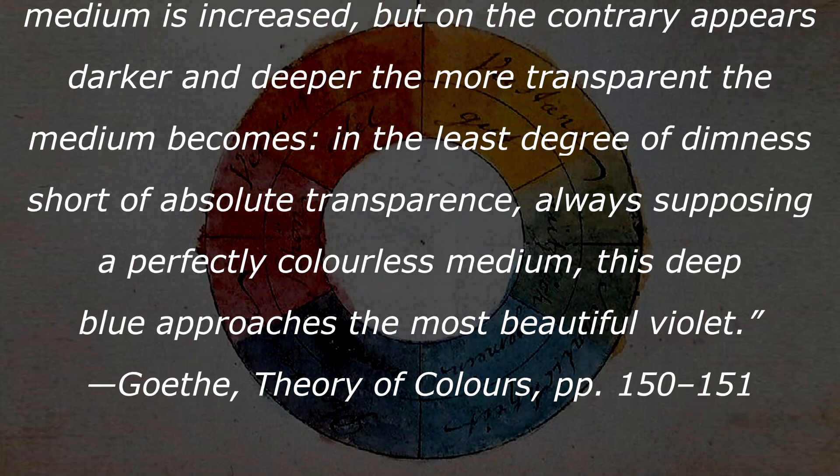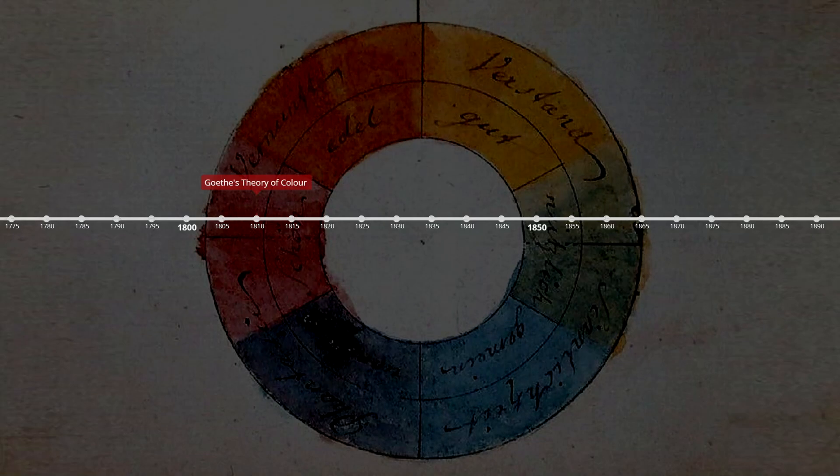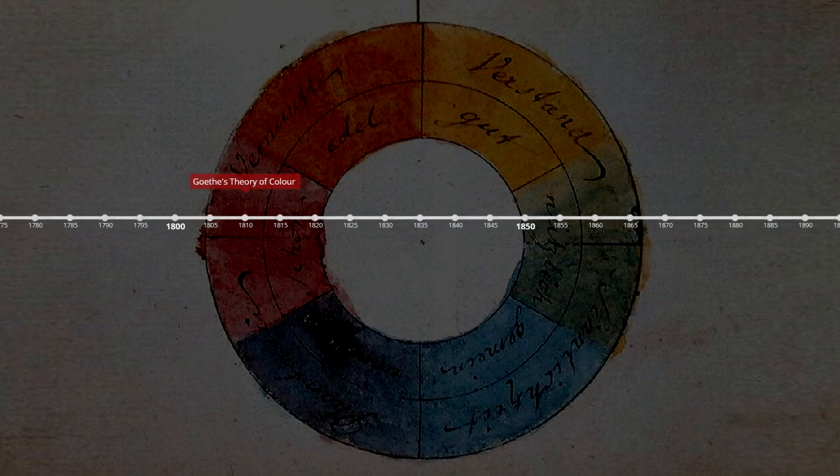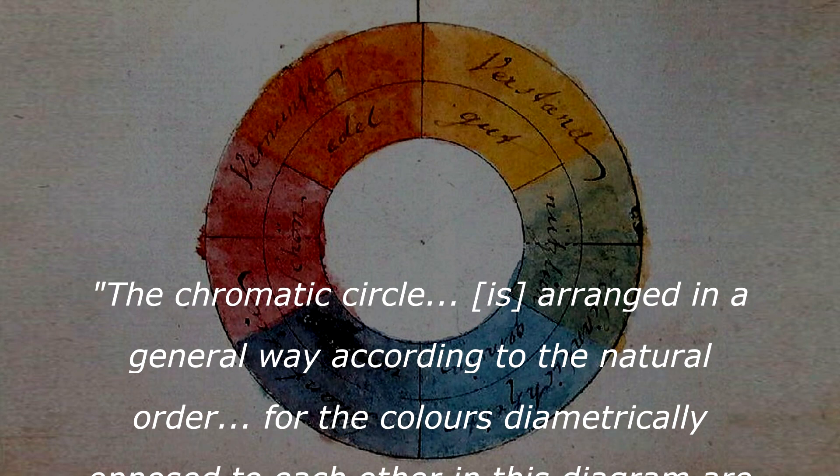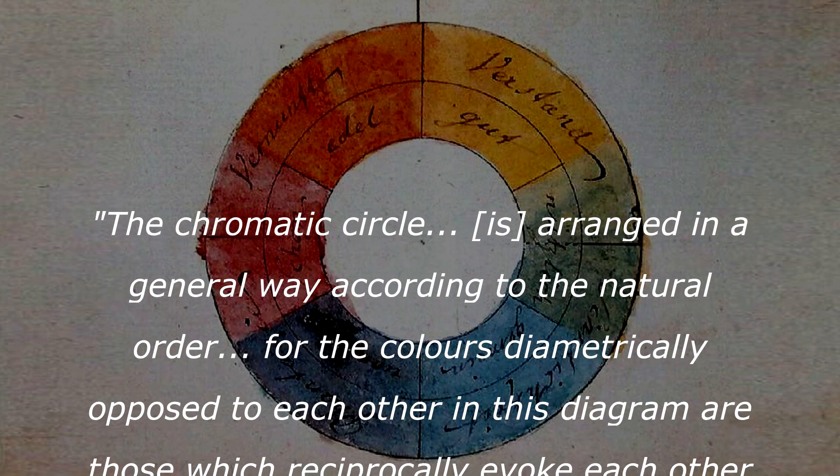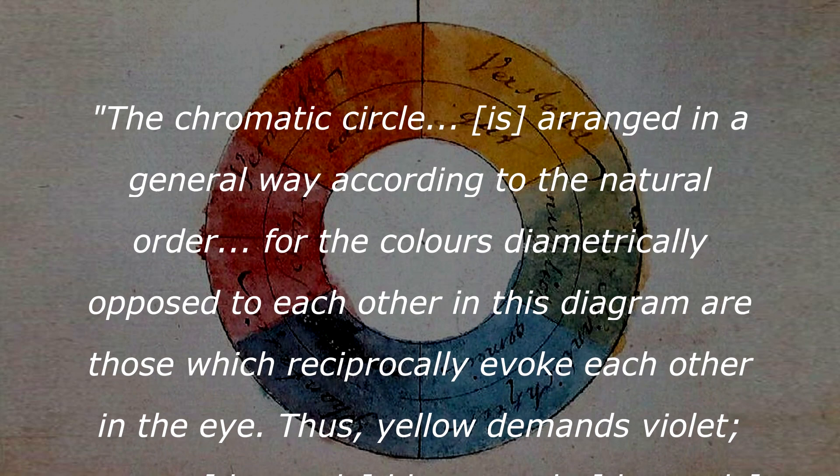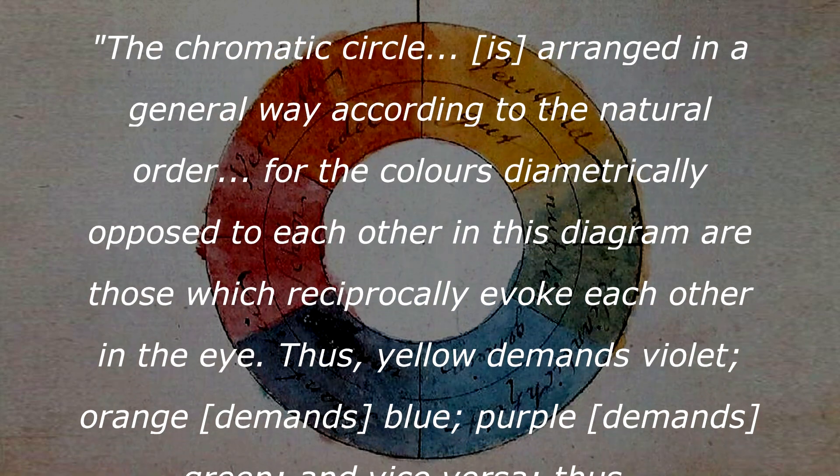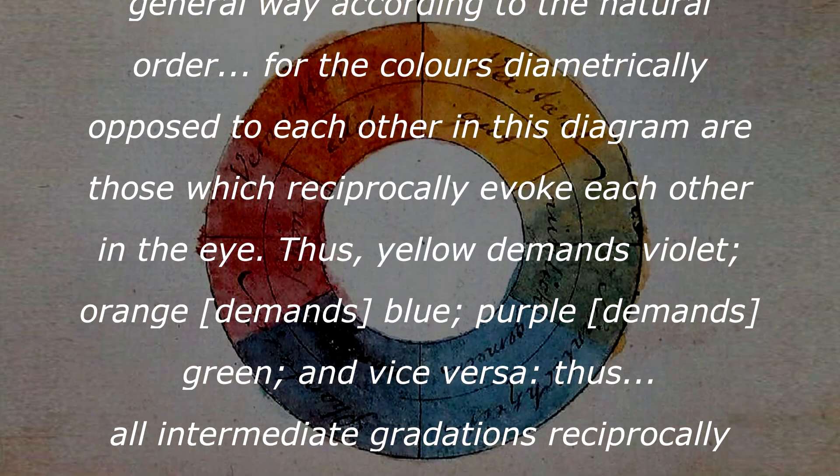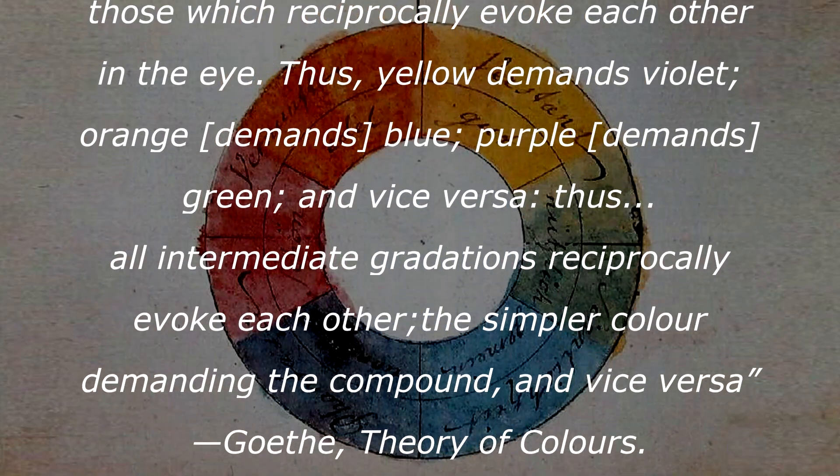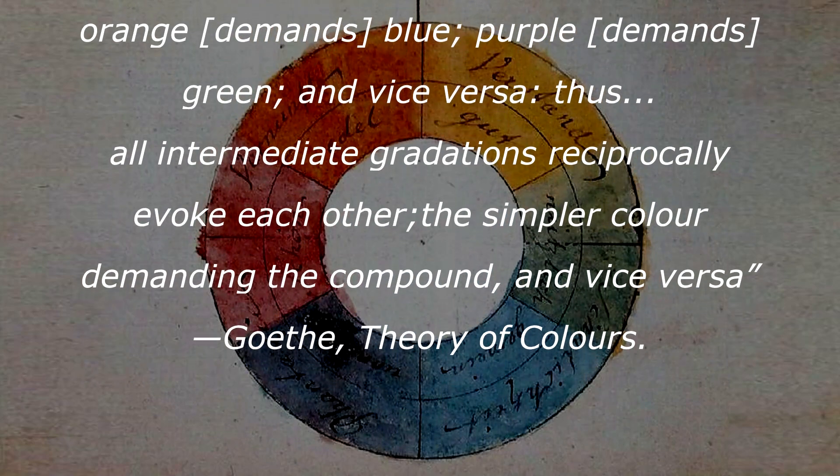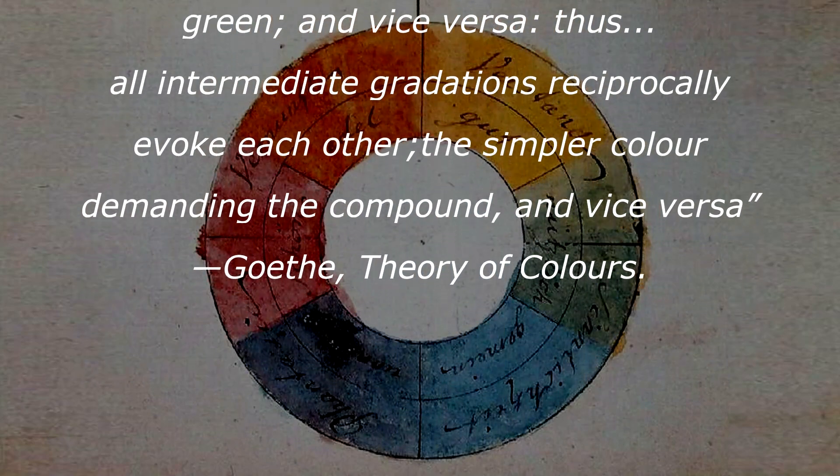this deep blue approaches the most beautiful violet. This was also when Goethe decided to study the colors and their relationship with human emotion and perceptions, and so he created his own color wheel that is closer to what we use today, which did in fact have colors on it. The chromatic circle is arranged in a general way according to the natural order. For those colors diametrically opposed to each other in this diagram are those which reciprocally evoke each other in the eye. Thus yellow demands violet, orange demands blue, purple demands green, and vice versa.